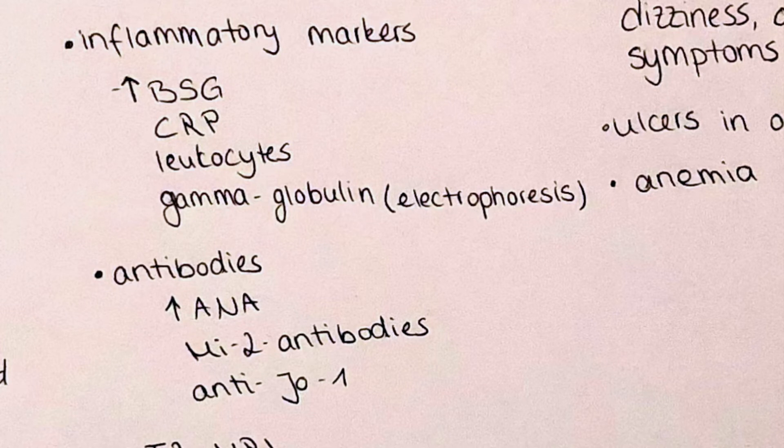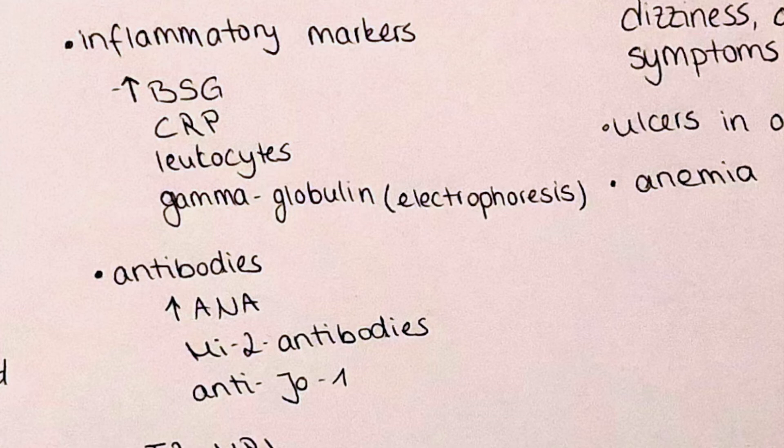As an autoimmune disease, there will also be antibodies detectable in the blood. One of them is ANA, or antinuclear antibody, which is a non-specific antibody also seen in many other autoimmune diseases. More specifically, but also more rarely observed, are antibodies like the MI2 antibody and anti-JO1 antibody — these are rarer but more specific for dermatomyositis.